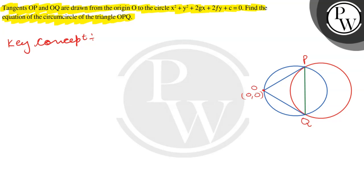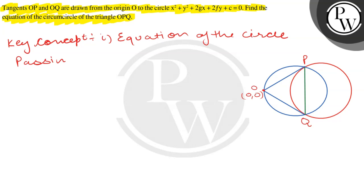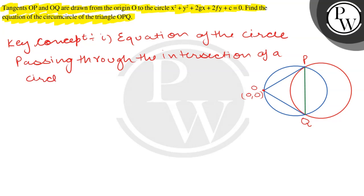This is the first key concept: the equation of a circle passing through the intersection of a circle S and a line S' is given by S + λ · S' = 0.